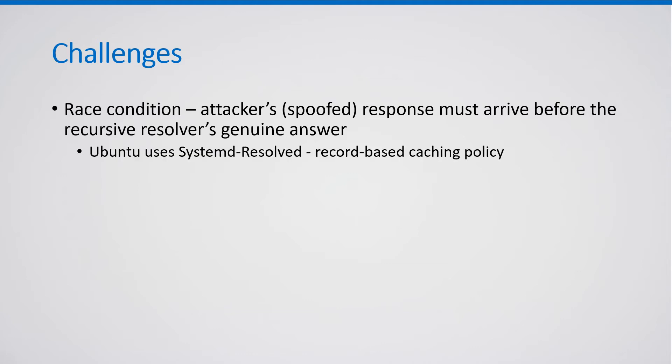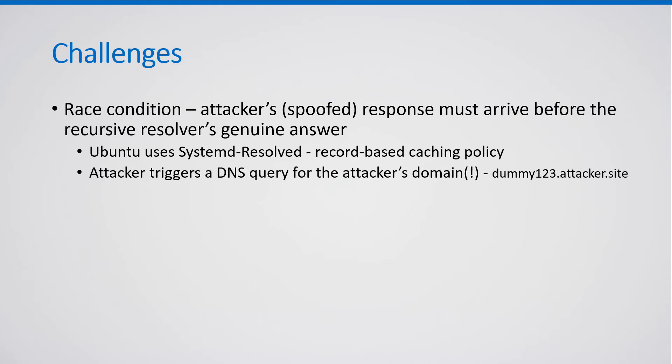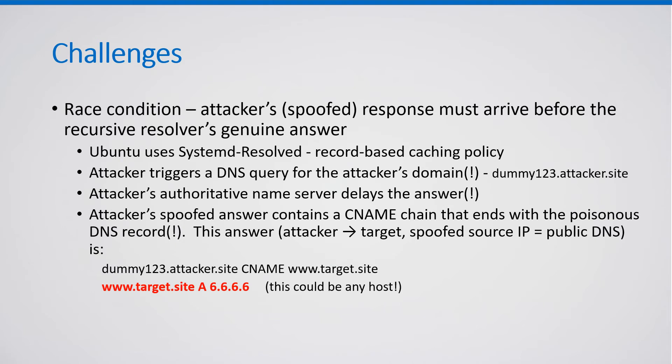Ubuntu, which is the most popular Linux distribution, uses by default a stub resolver called systemd-resolved that employs a record-based caching policy. This makes the attack much more effective because the attacker can trigger a DNS query to the attacker's domain — for example, dummy123.attacker.site. The attacker's authoritative nameserver delays the answer, extending the attack window. The attacker's spoofed answer contains a CNAME chain that ends with a poisonous DNS record mapping an arbitrary hostname, www.target.site in our example, to an arbitrary address, 6.6.6.6 in our example. Since systemd-resolved caches by record, it caches this poisonous record, overriding any previously cached record, and serves it for any subsequent query for www.target.site. Thus the attacker achieves cache poisoning of an arbitrary hostname with arbitrary data of the attacker's choice.